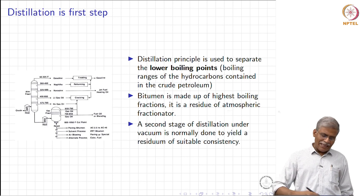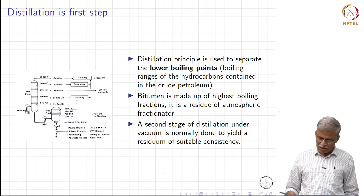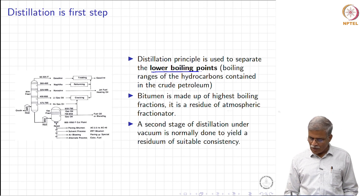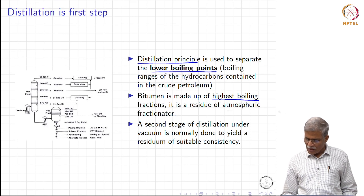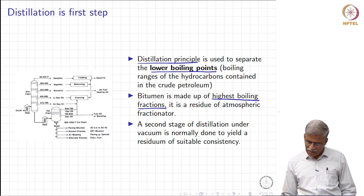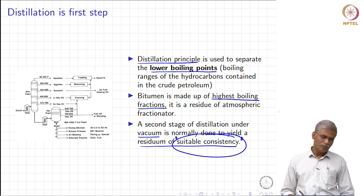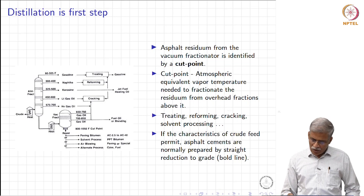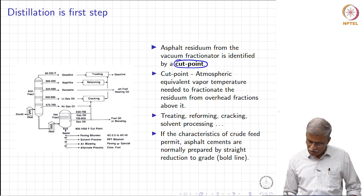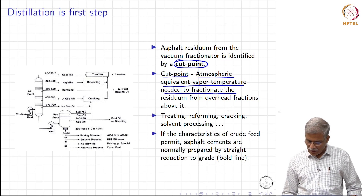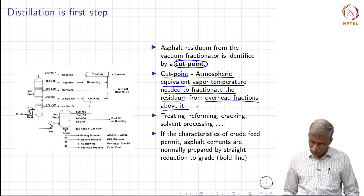Some details associated with this distillation: the principle is that lower boiling point fractions are separated first. Bitumen is made up of the highest boiling fractions and is basically the residue that comes out. A second stage of distillation under vacuum is normally carried out to get a residuum of suitable consistency — and that is the keyword. The cut point is defined as the atmospheric equivalent vapour temperature needed to fractionate the residuum from the overhead fractions above it.